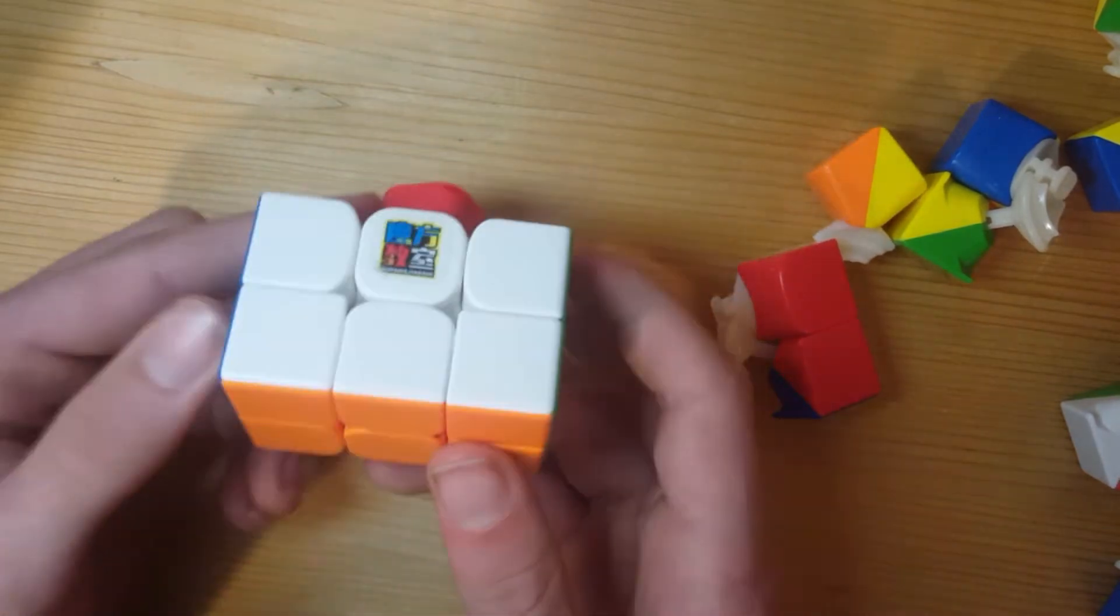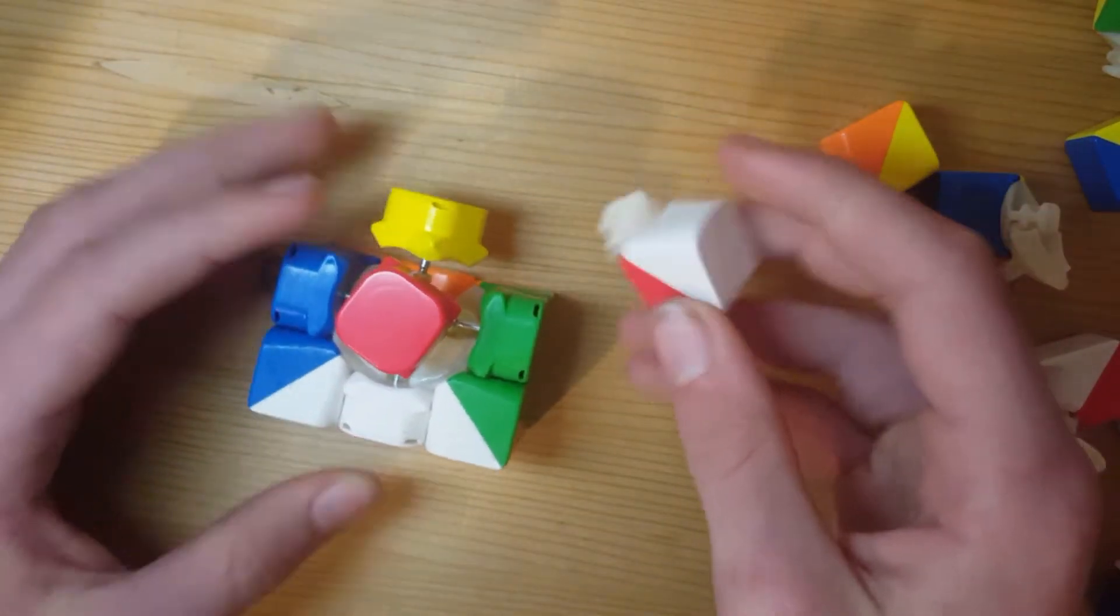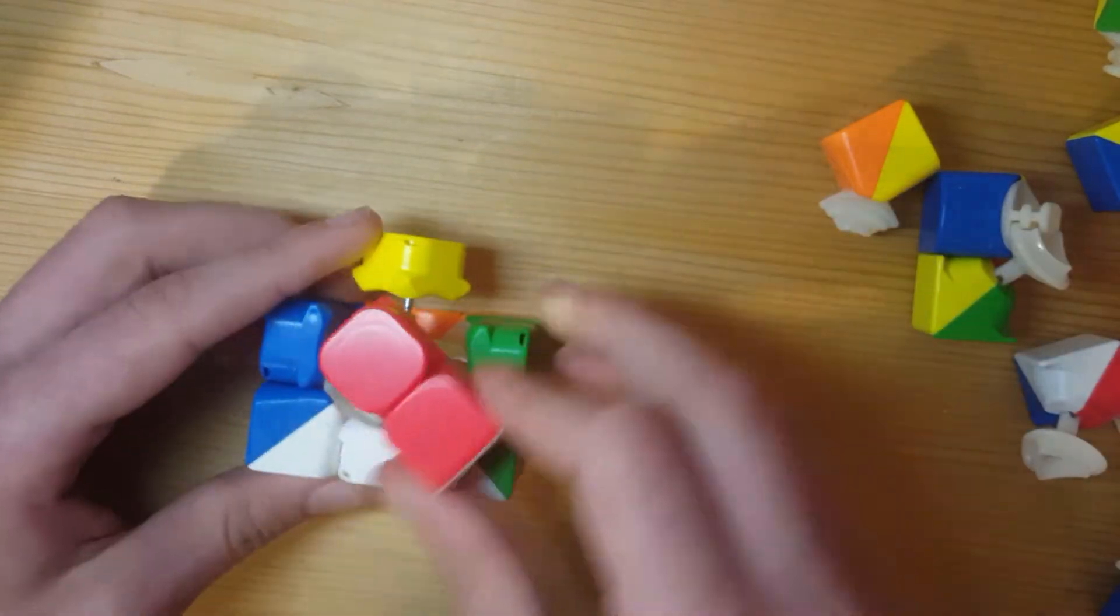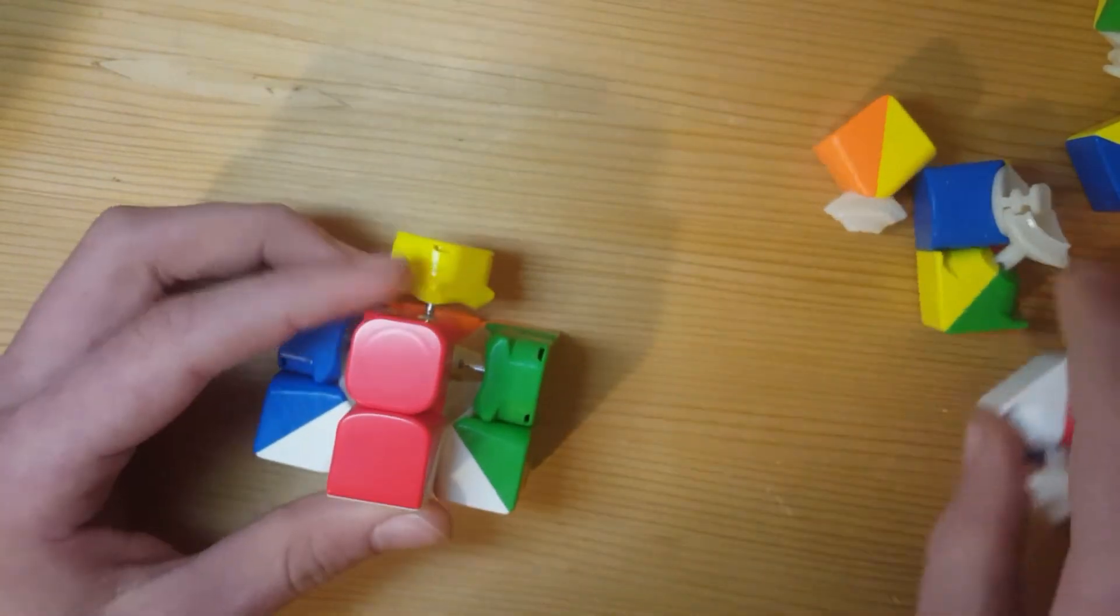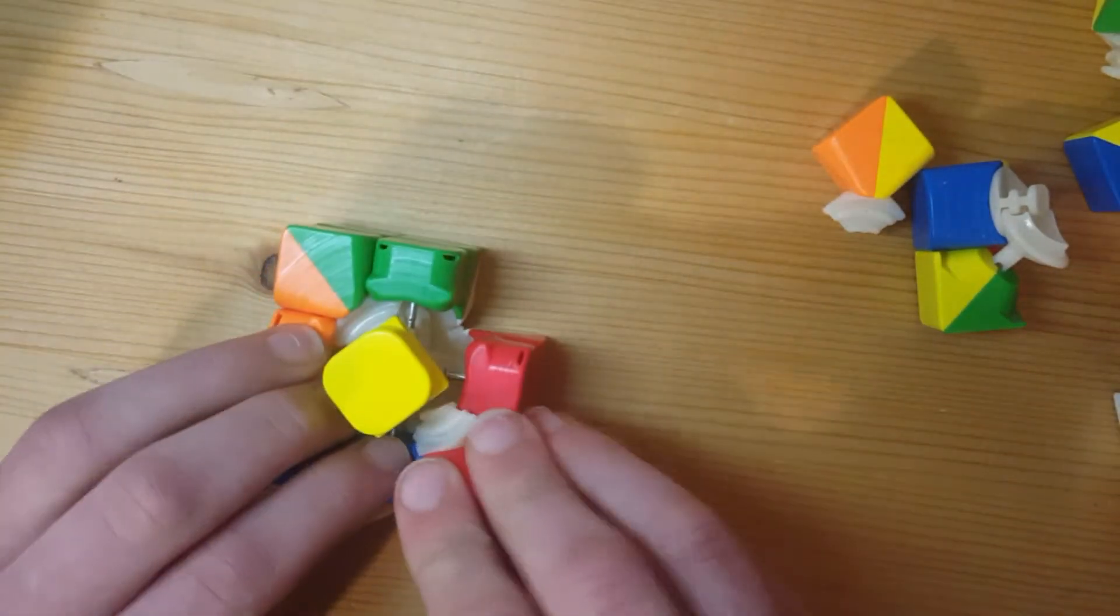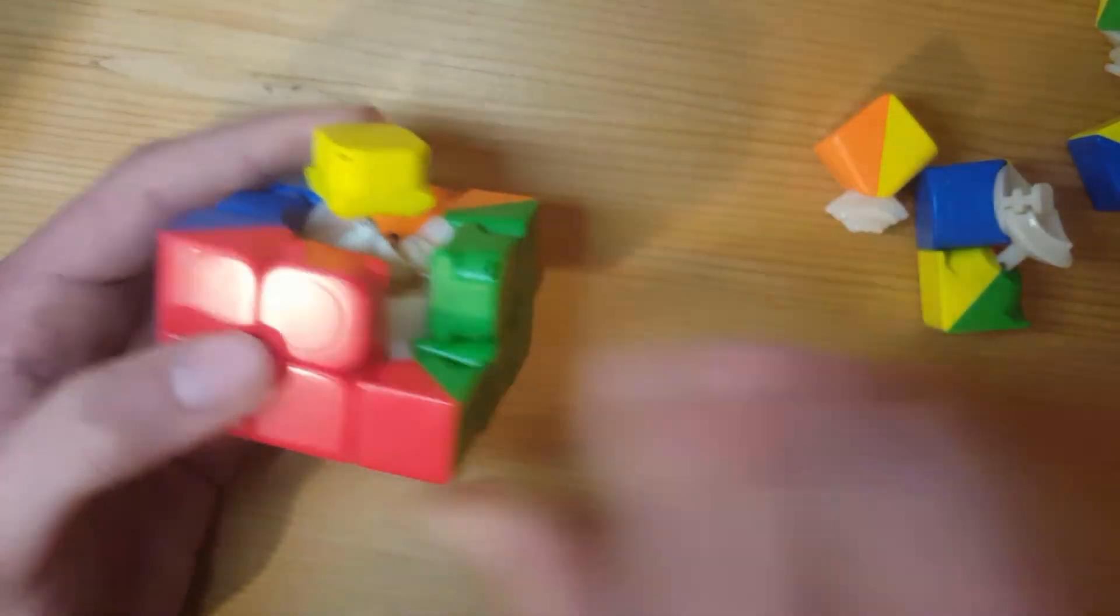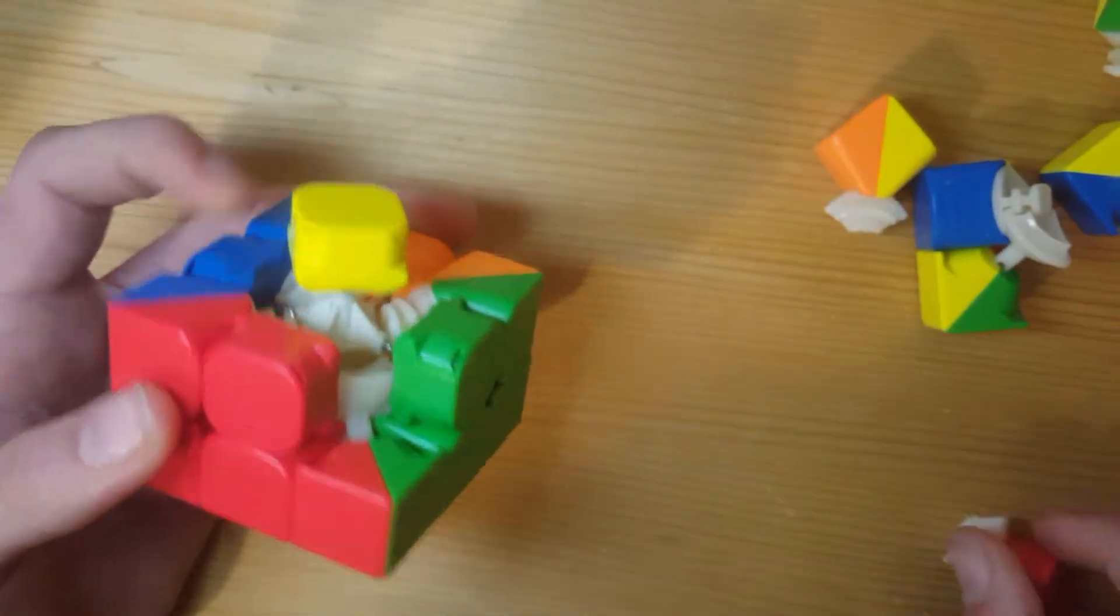Now that we have this section here we can grab another edge piece that has white on it and put it in place and then we'll do the same thing to the corners and the edges. Except we're gonna leave one edge open so I will put that piece in and I'll put this corner in but I will not put this edge in just yet. We're gonna wait on that.